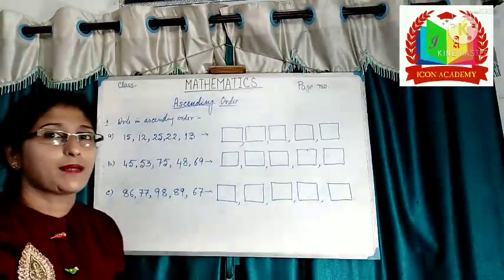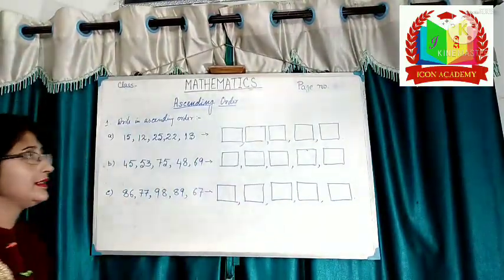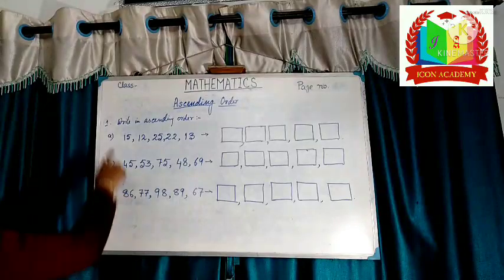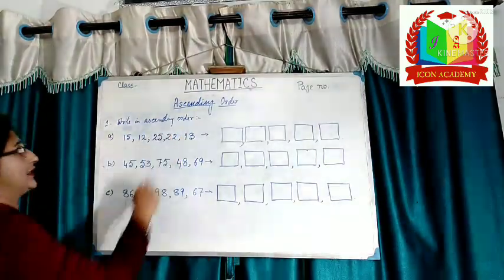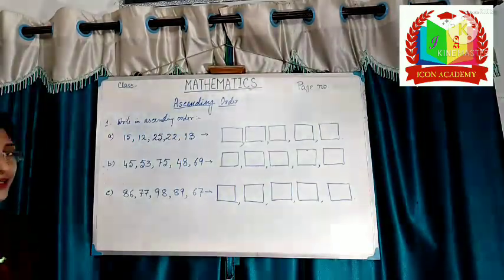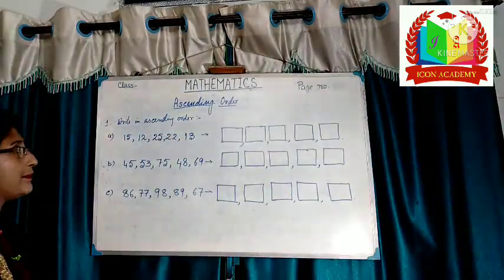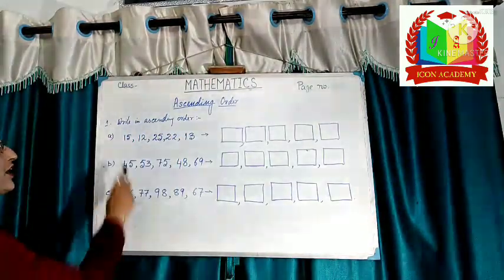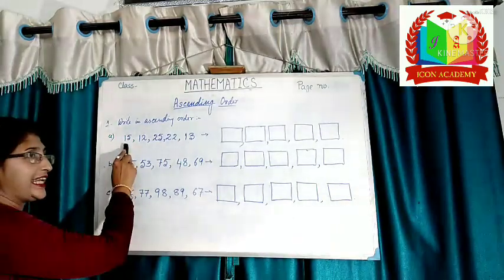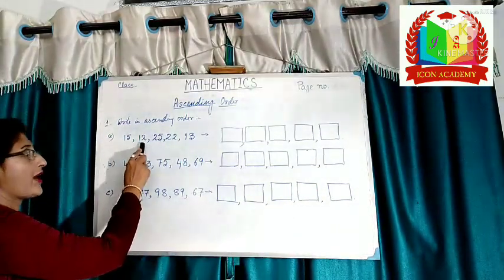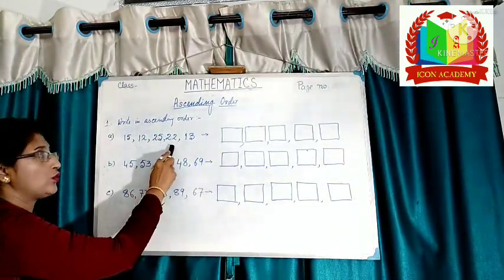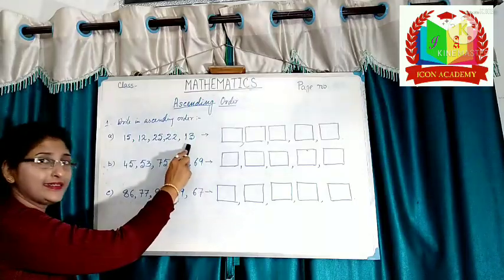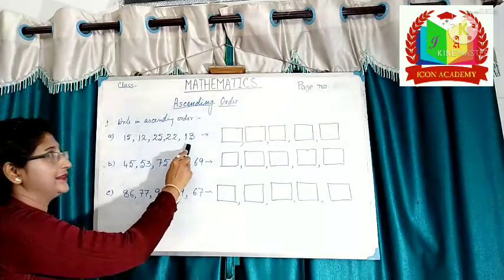Let's solve some examples. Write in ascending order. Here the numbers are 15, 12, 25, 22, and 13.